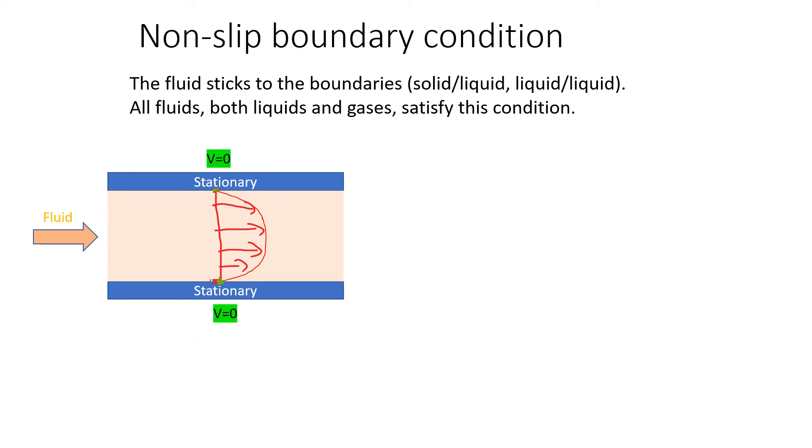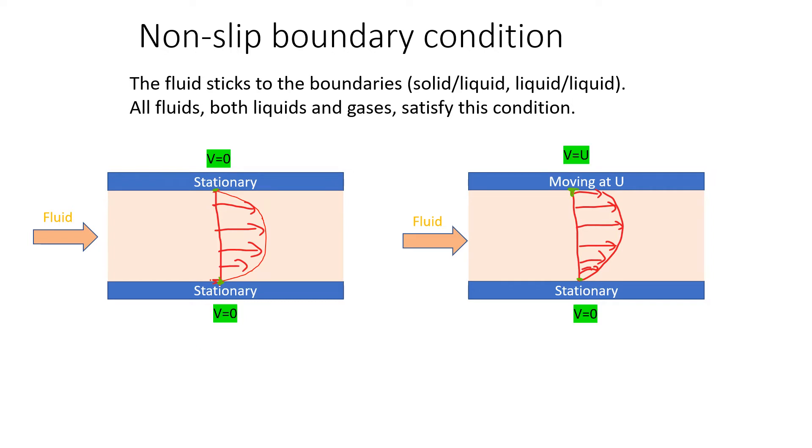Another example: we change the problem a little bit. Still a fluid in the channel, but if the upper side of the channel moves at speed u, then based on the non-slip boundary we know that on top, the velocity of fluid equals velocity of the solid channel, which equals u. At the bottom, still stationary, the fluid at that boundary is still zero.